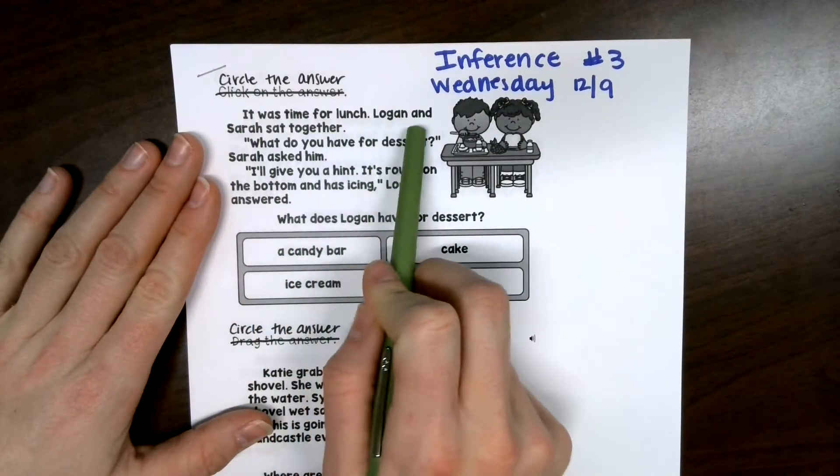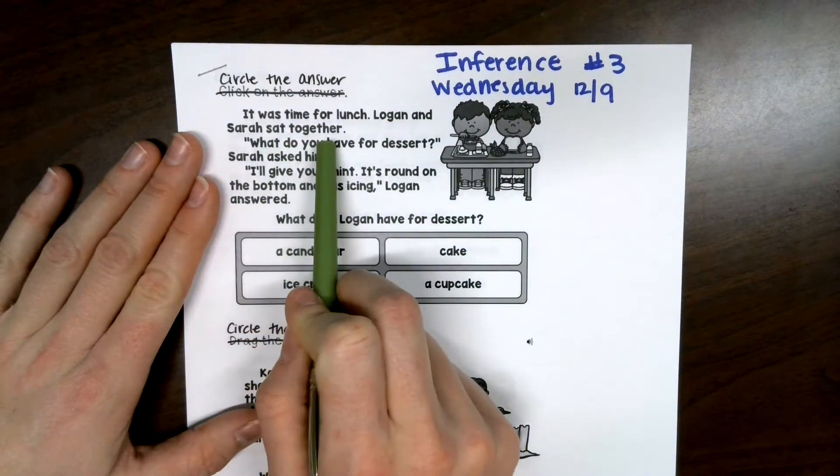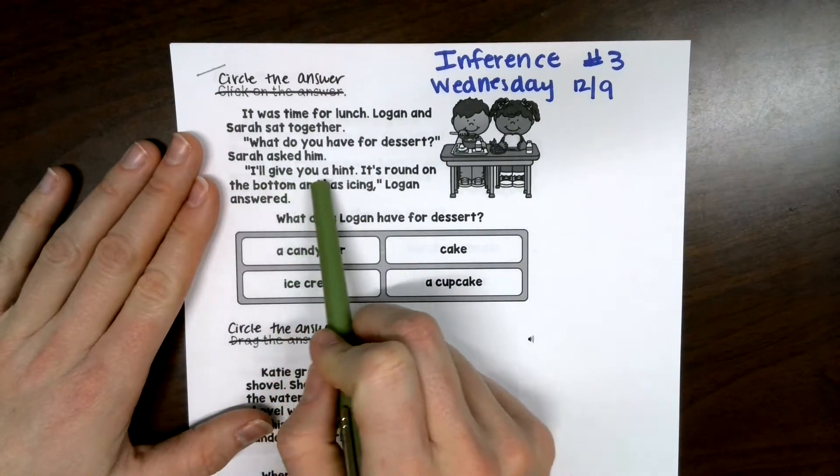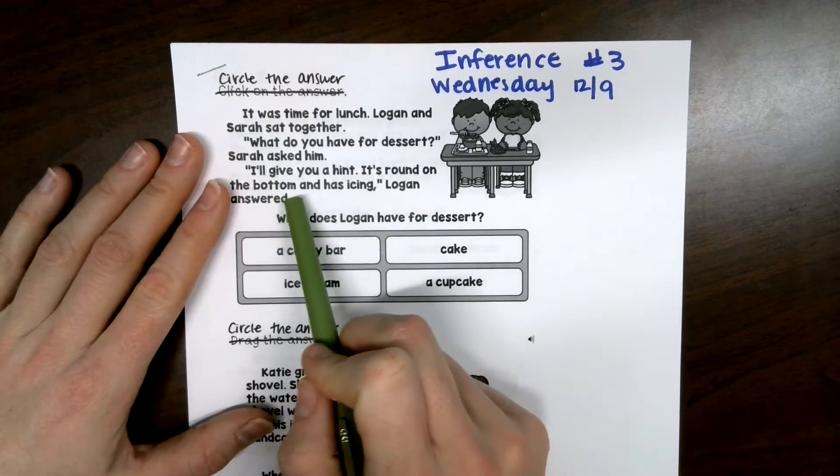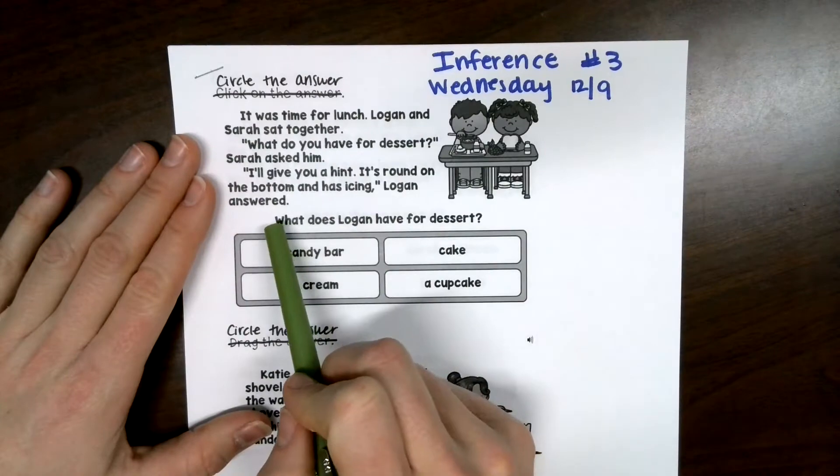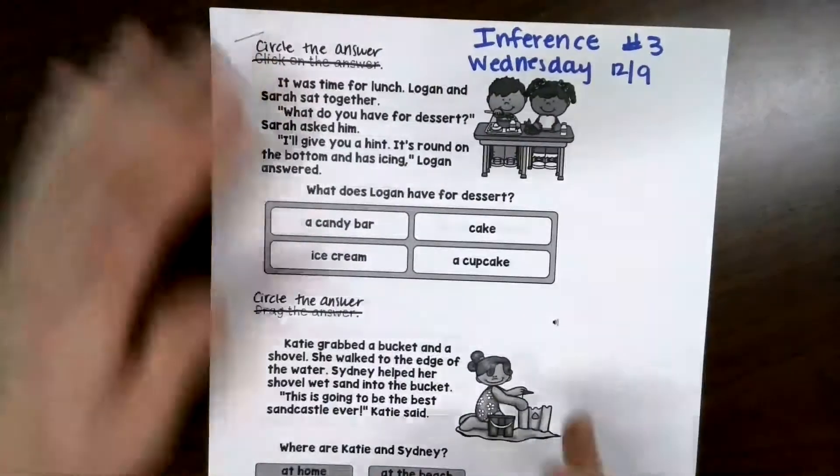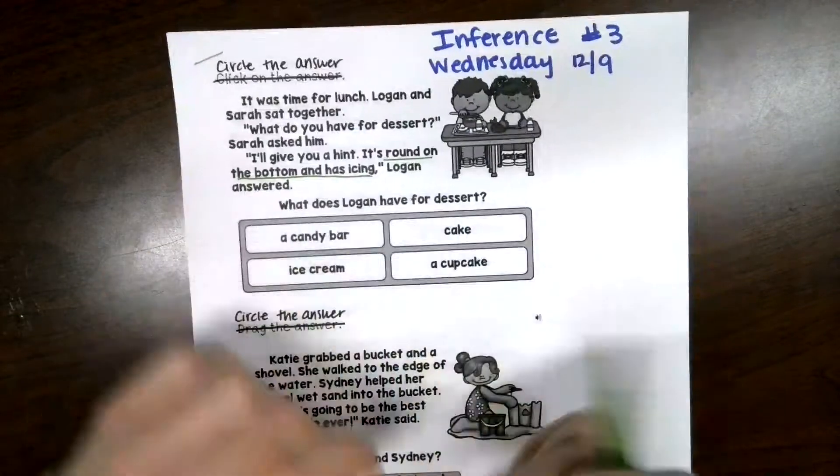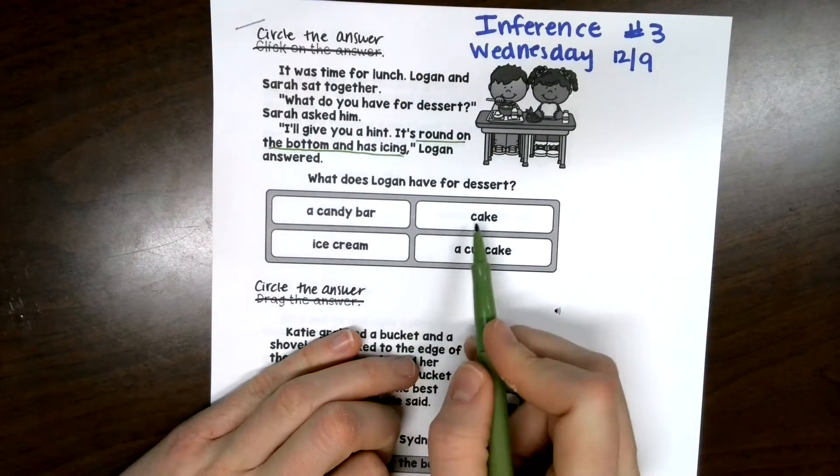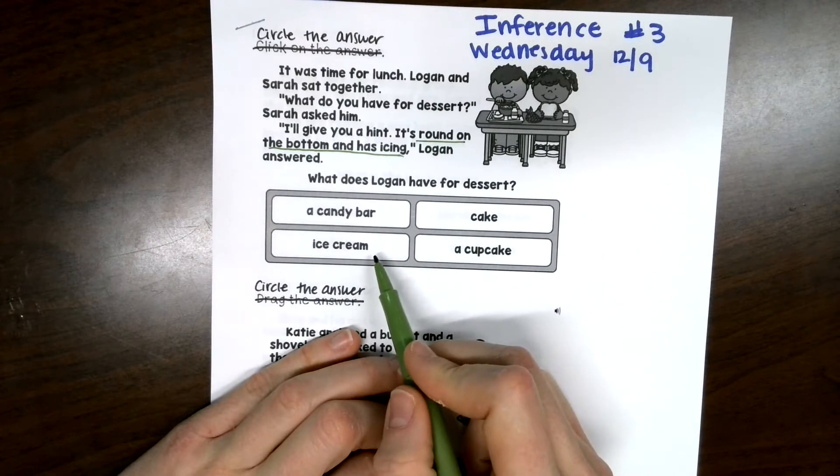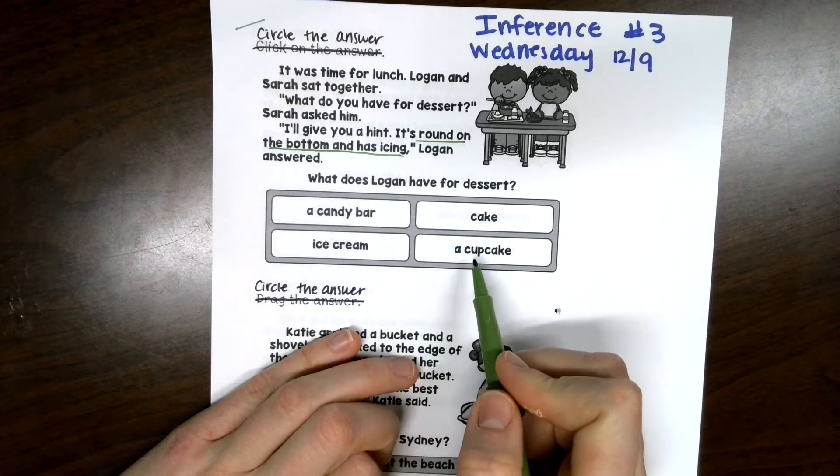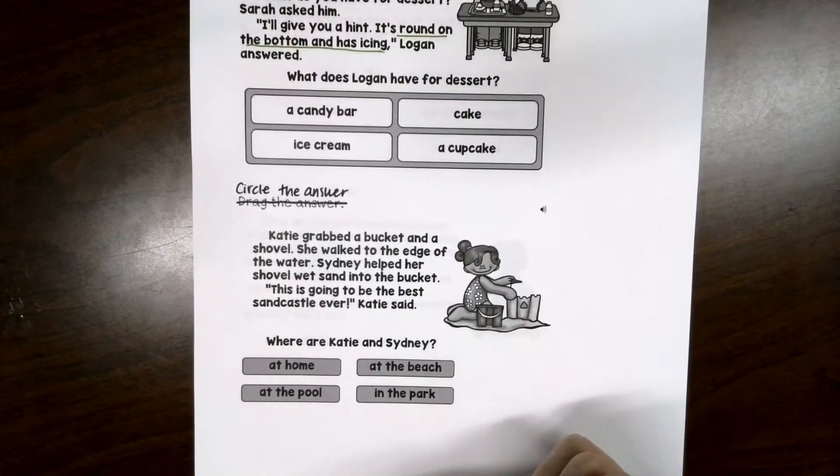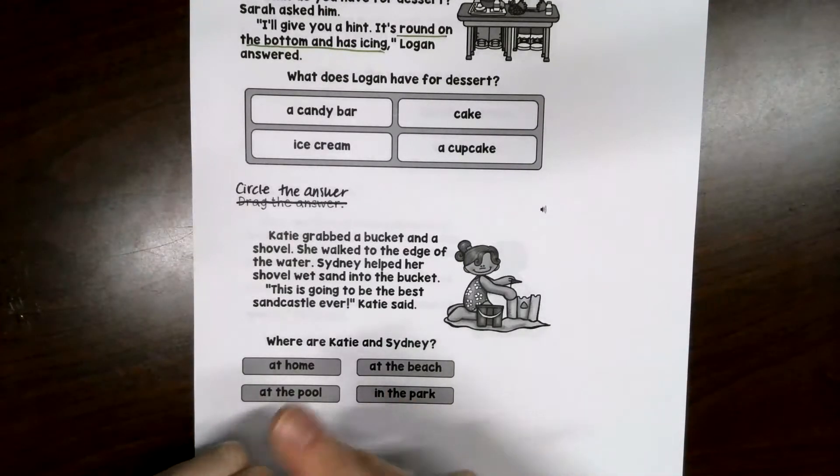It was time for lunch. Logan and Sarah sat together. What do you have for dessert? Sarah asked him. I'll give you a hint. It's round on the bottom and has icing. Logan answered. So, what does he have for dessert? So, my hint is it's round on the bottom and has icing. What's round on the bottom and has icing? A candy bar, a cake, an ice cream, or a cupcake. Think about what he would bring. Circle or color in your answer. Pause it here if you need a little bit more time. You can also rewind and play it again if you need to hear me again.